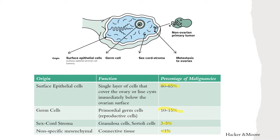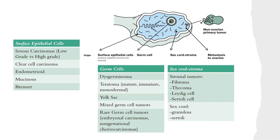Surface epithelial cells include serous carcinomas, clear cell carcinomas, endometrioid type, and mucinous types. Brenner tumors also arise from surface epithelial cells — most are benign, but about 2 percent can be malignant. Germ cells include dysgerminomas, teratomas, yolk sac, and mixed germ cell tumors. Sex cord stromal cells can be divided into stromal tumors — fibromas, thecomas, Leydig-Sertoli — and sex cord tumors like granulosa and Sertoli components.